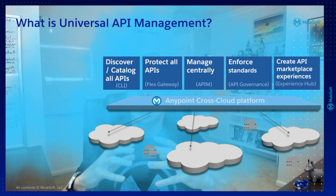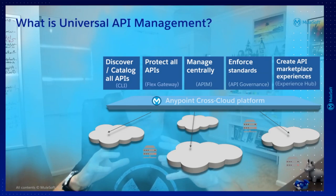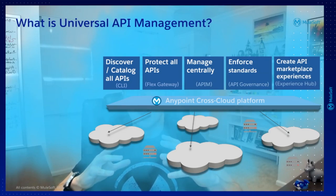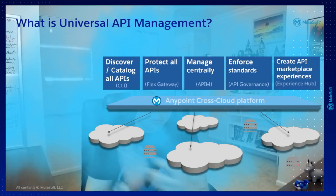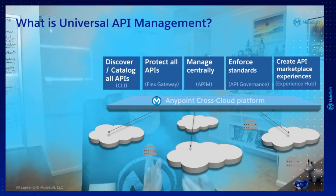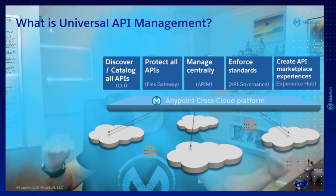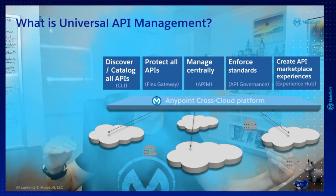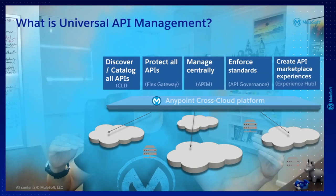FlexGateway is going to not only protect those APIs, but also add observability. It is going to have the ability to push all of this information going through these APIs into any existing third-party system that might already be in place within a firewall of the customer.